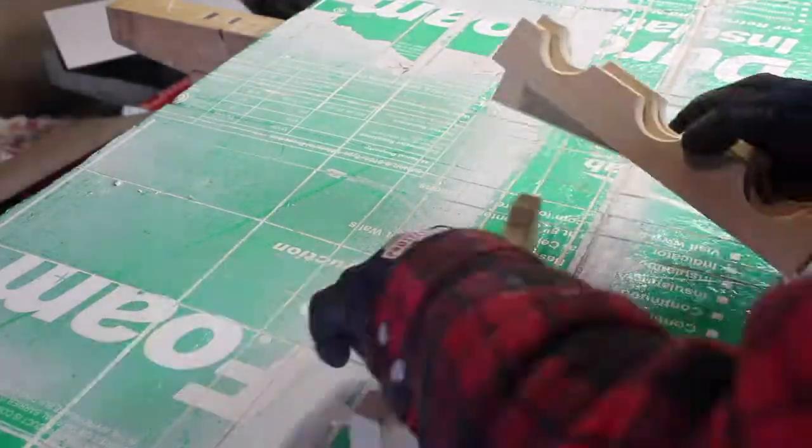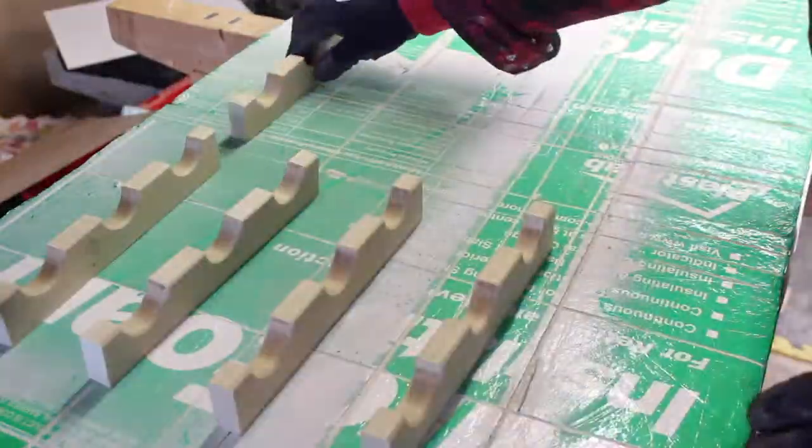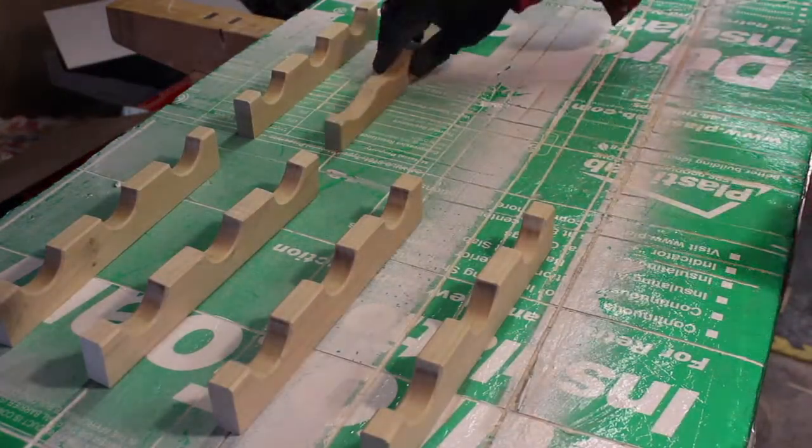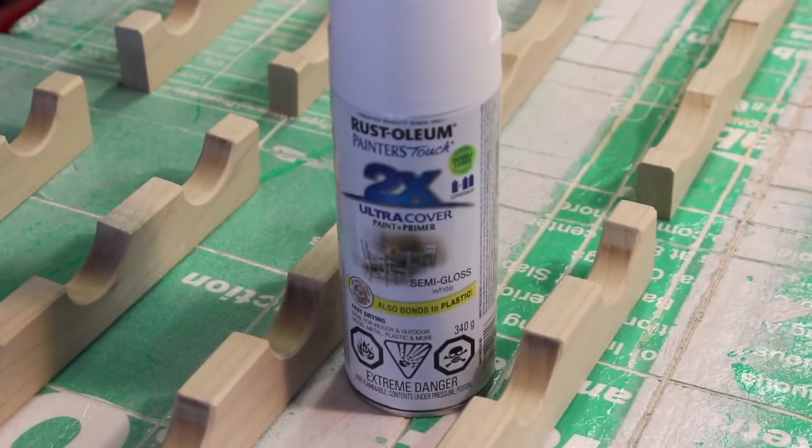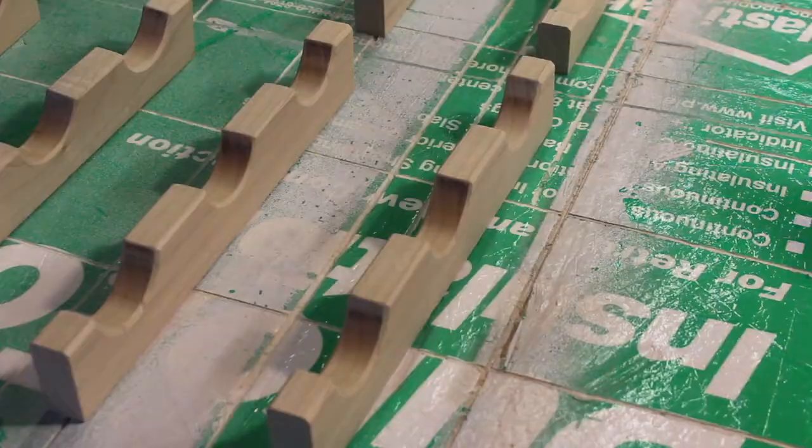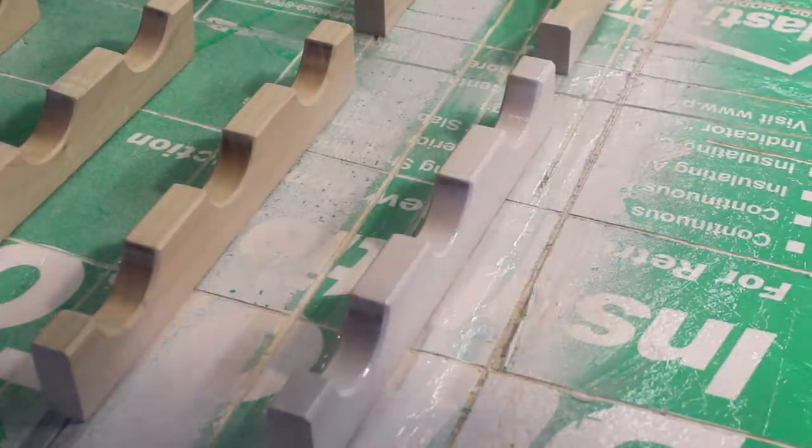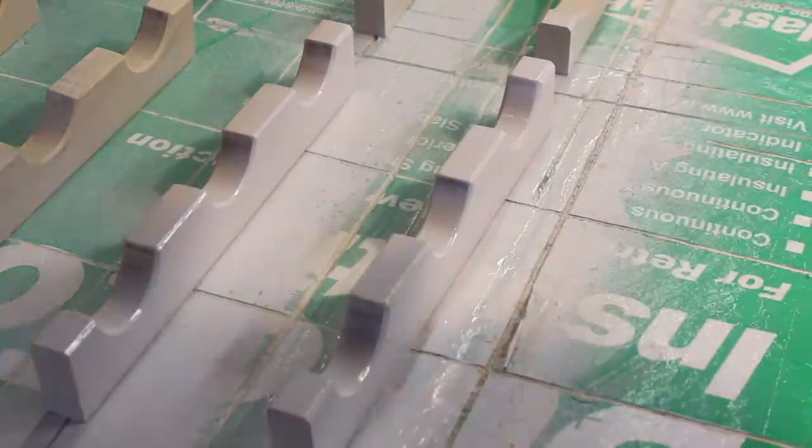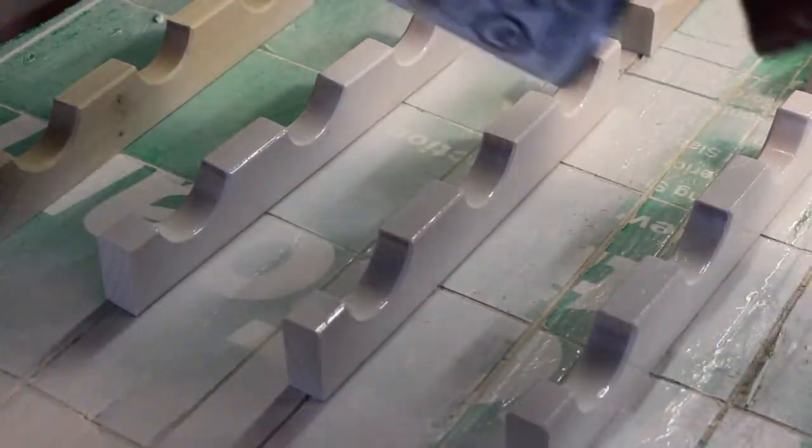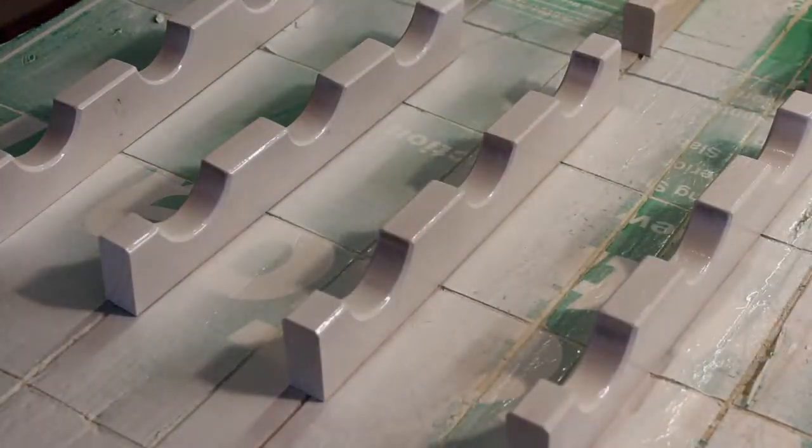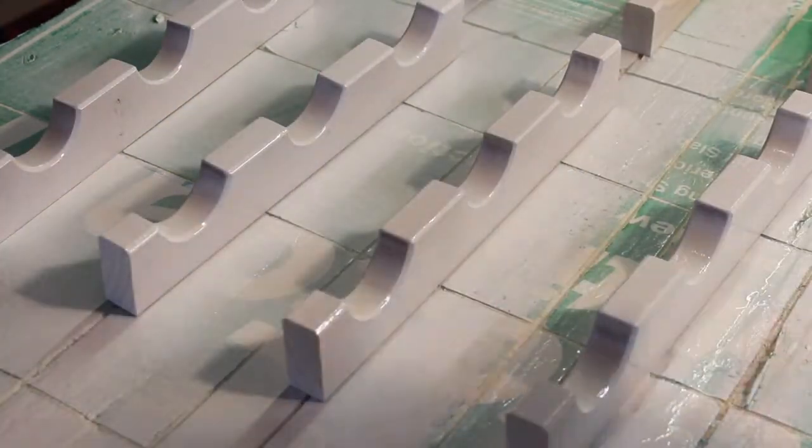After a little bit of sanding just to make sure there are no rough edges these guys are ready for a quick coat of paint. The simplest, easiest way to do this is with just some spray paint. This is a two in one so primer, paint, all in one, semi-gloss.